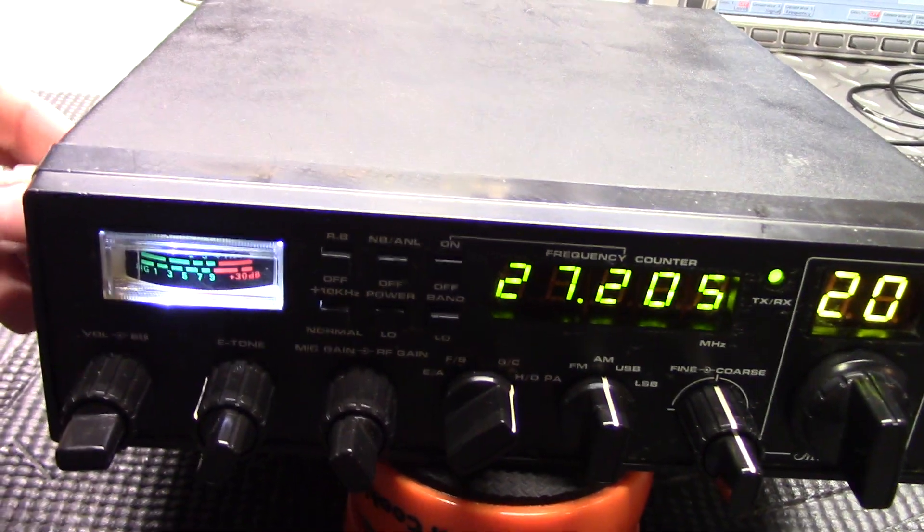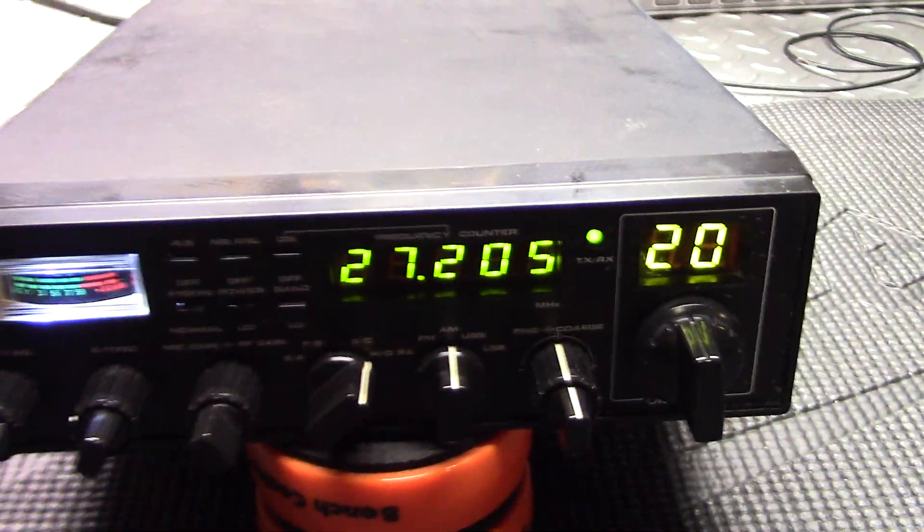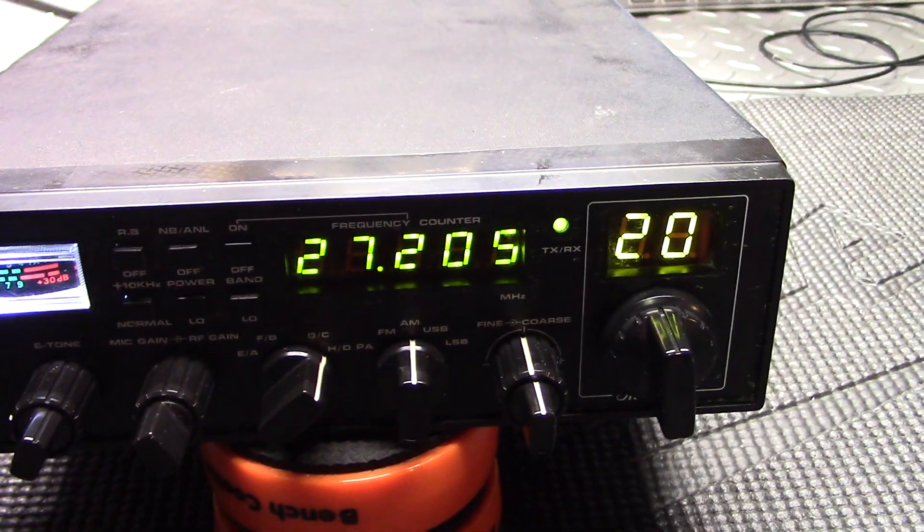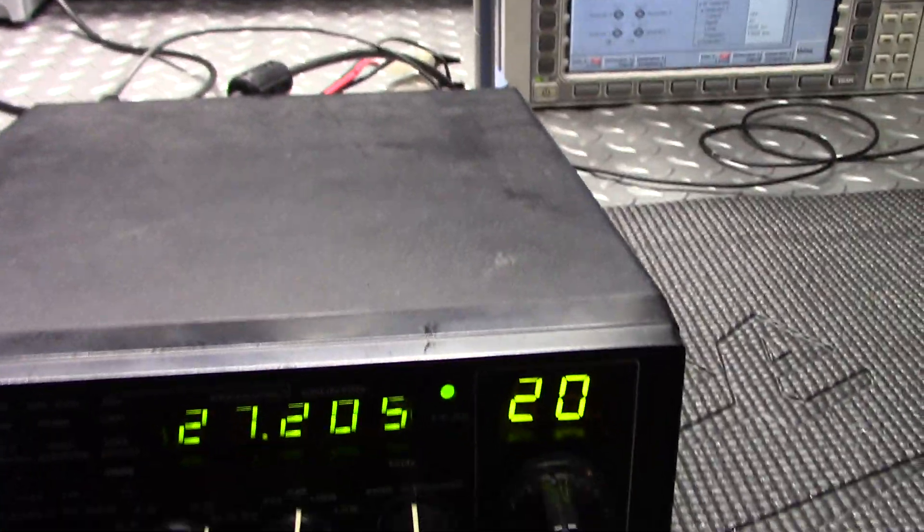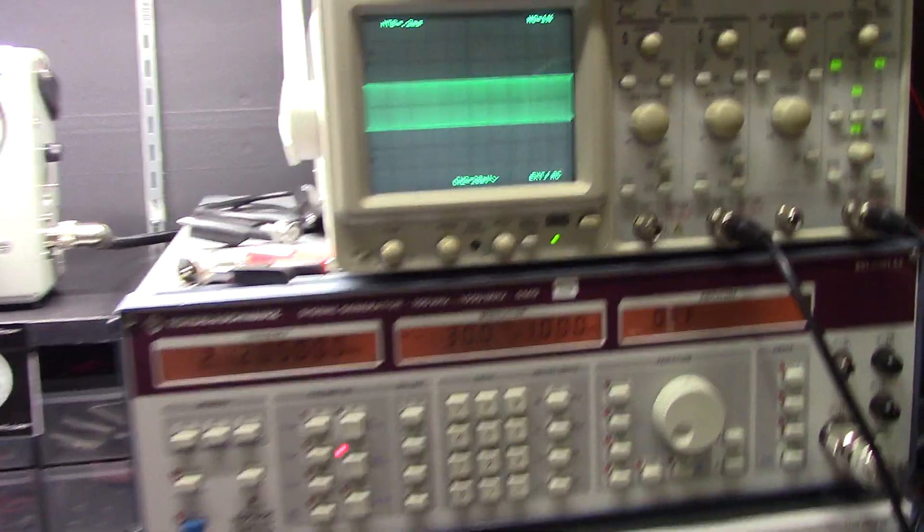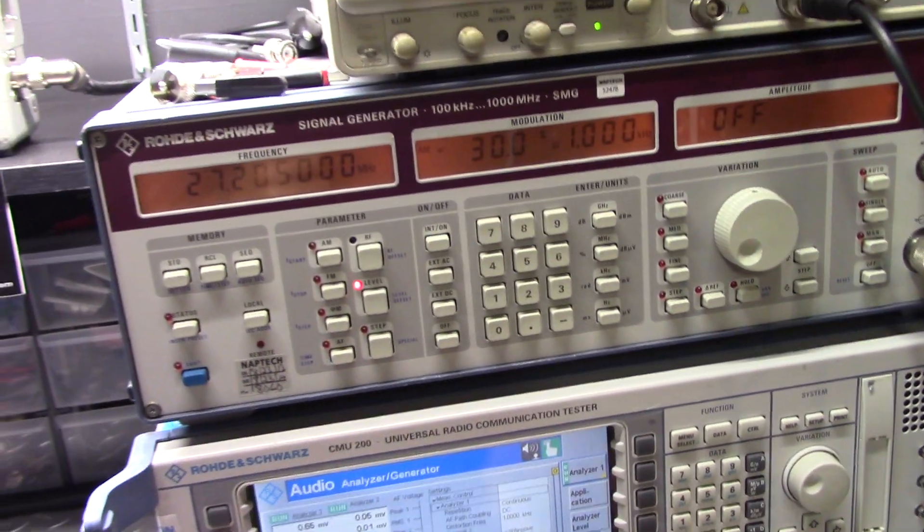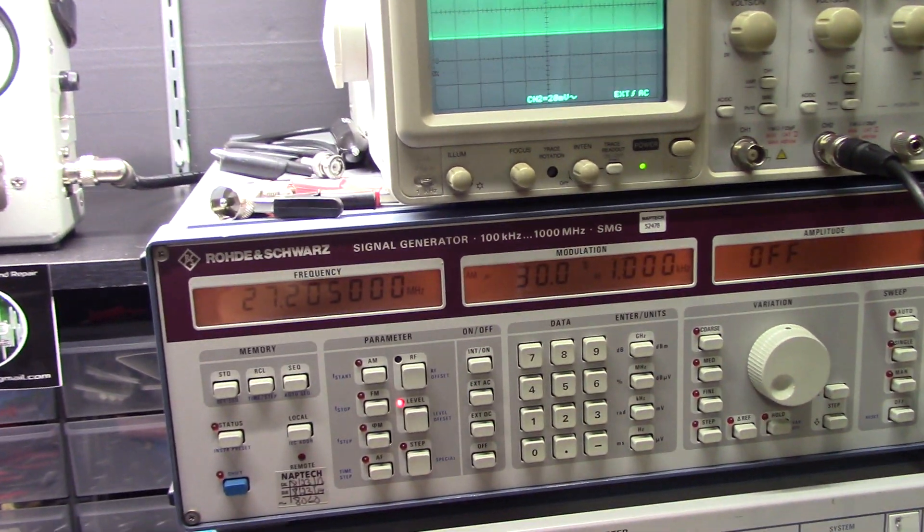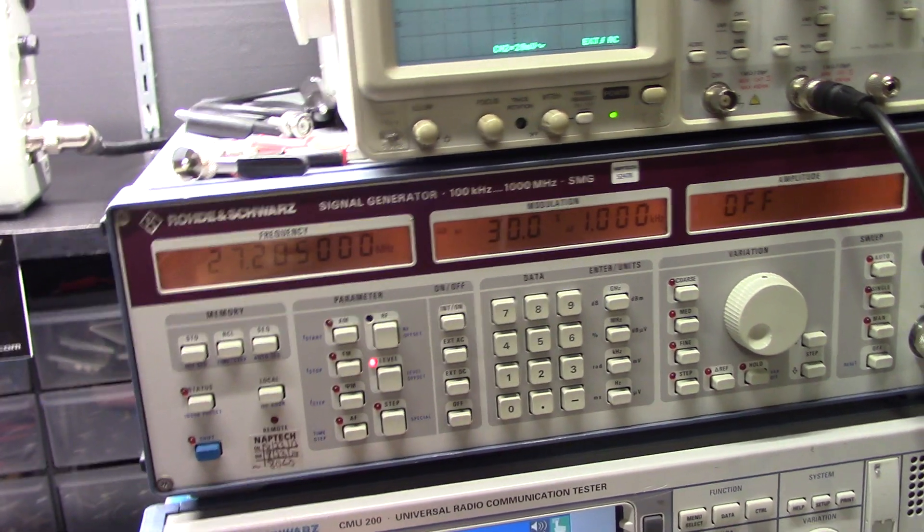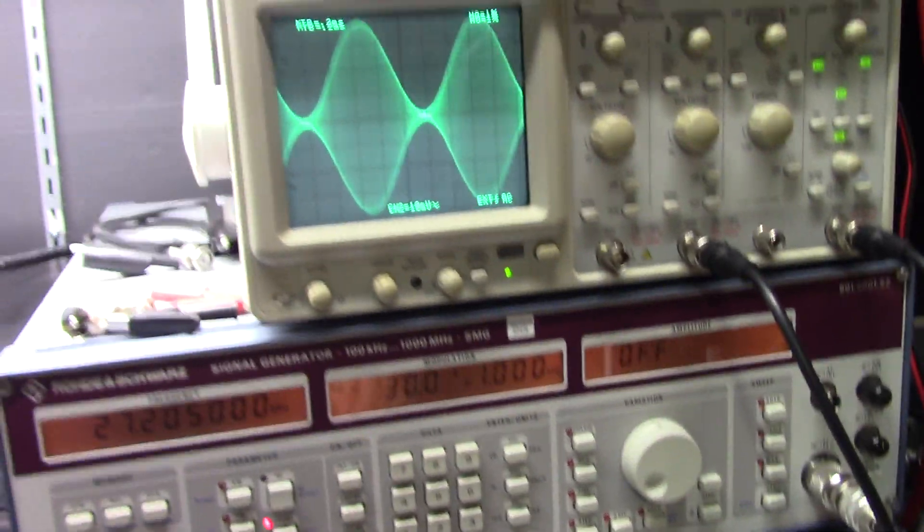Let's start with the transmit. We are on AM, mic gains all the way up. We'll start with the scope work on the transmit side. We'll get our audio in there and we will start with a carrier. About two divisions there. We'll throw our tone into it. There's that tone. Okay, very nice.